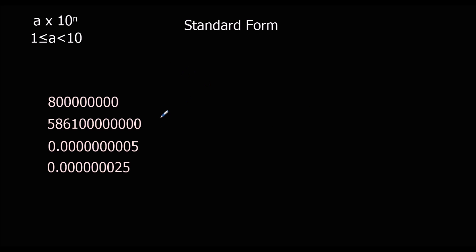Okay, so firstly the number between 1 and 10 is 8, times 10. How many times? 1, 2, 3, 4, 5, 6, 7, 8 times. So 8 times 10 to the power of 8.